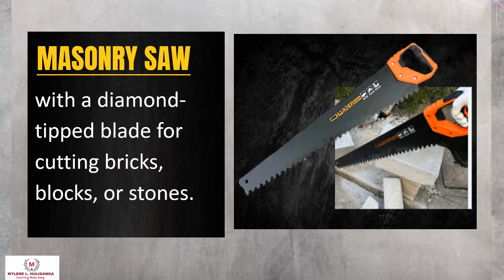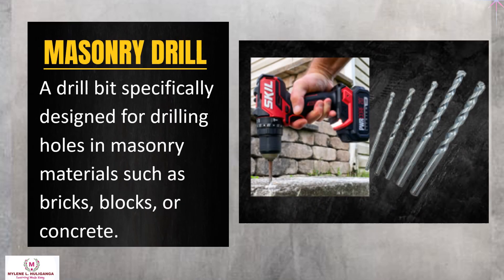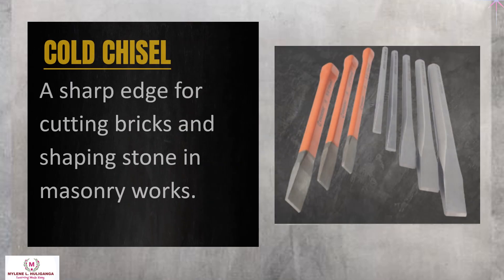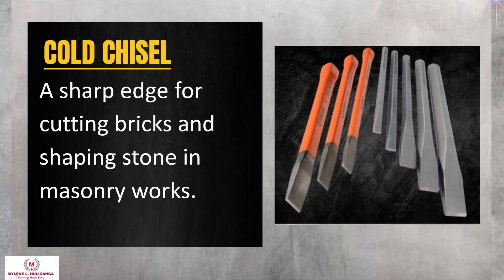Masonry saw: equipped with a diamond-tipped blade for cutting bricks, blocks, or stones. Masonry drill: a drill bit specifically designed for drilling holes in masonry materials such as bricks, blocks, or concrete. Brick jointer: a handheld tool with a pointed or rounded edge for shaping and smoothing mortar joints between bricks or blocks. Cold chisel: a sharp edge for cutting bricks and shaping stone in masonry works.